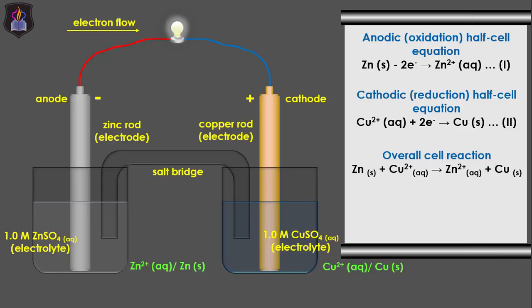If the connections are reversed by making the copper half cell the anode and the zinc half cell the cathode, electrons will cease to flow. This is because electrons cannot flow from a less reactive or electropositive element to a more reactive or electropositive element. Since copper is less reactive than zinc, it cannot reduce zinc ions, and therefore cannot act as the anode.